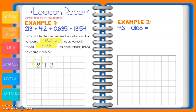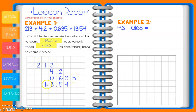My first number is 213 — it's a whole number, so the decimal point is all the way to the right. Then I have 4.2, then 0.635. I line up those decimal points — 6, 3, and 5. Then our last number is plus 13.54, so I line them up: 1, 3, decimal point, all nice and neat, then my 5 and my 4.